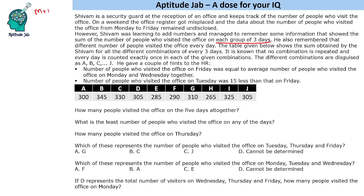Each group of three days means all possible combinations — like Monday plus Tuesday plus Wednesday, Monday plus Tuesday plus Thursday, likewise Wednesday plus Thursday plus Friday — all these possible combinations he remembered. He also remembered that a different number of people visited the office every day. The table given below shows the sum obtained by Shivam for all the different combinations of every three days. No combination is repeated, every day is counted exactly once in each combination, and the combinations are labeled a, b, c through j.